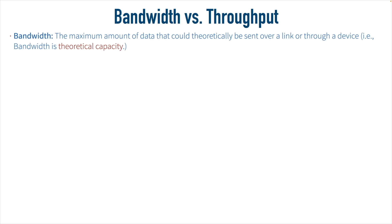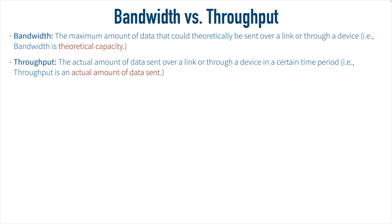Let's begin by contrasting bandwidth with throughput. When we say bandwidth, we're talking about the theoretical maximum amount of data that we could push through a link — this is the theoretical capacity, and it's unlikely we would ever reach this maximum in real life. Instead, we might be concerned with throughput. That's the actual amount of data that is sent over a link or through a network device like a switch or a router over a certain period of time. So bandwidth is theoretical; throughput is actual data.